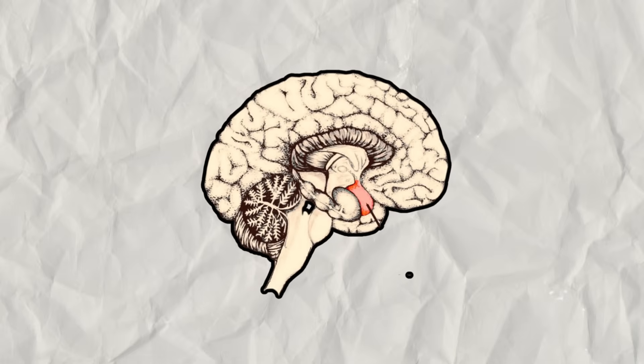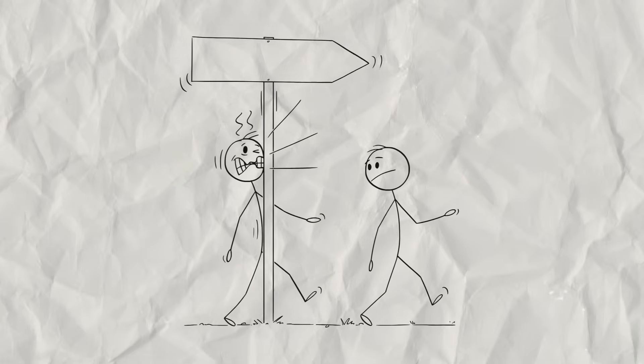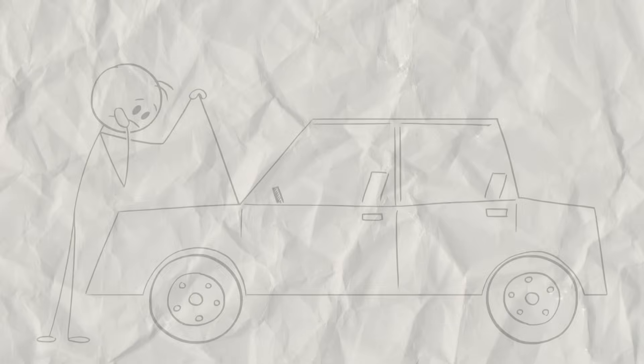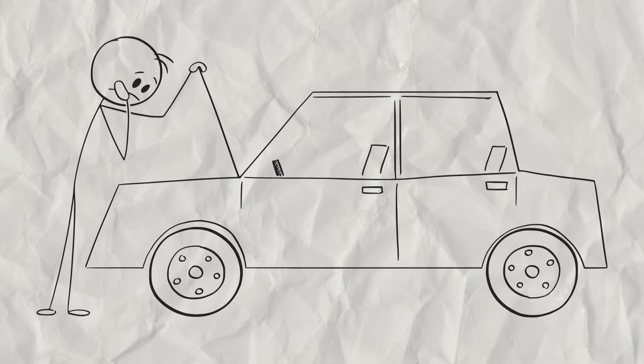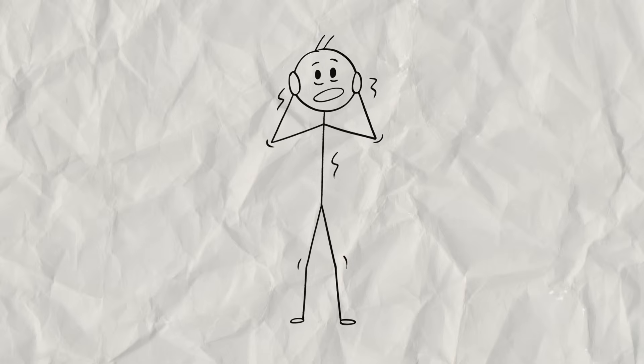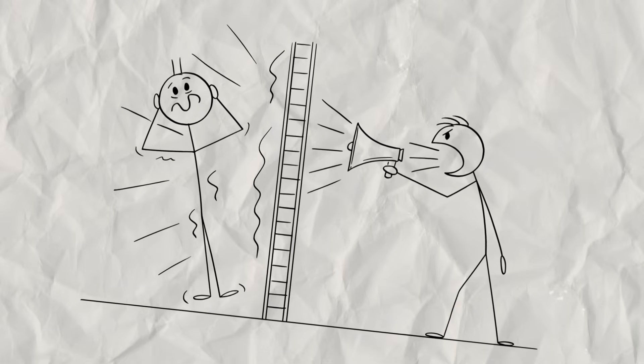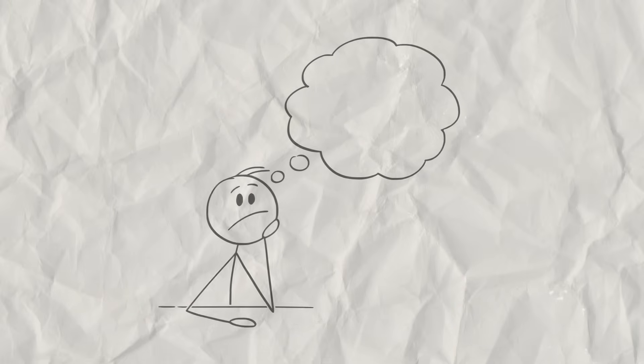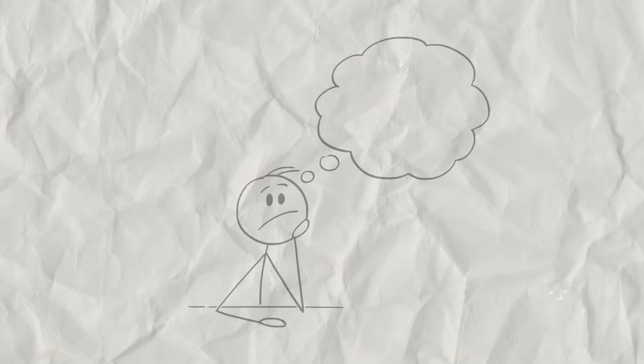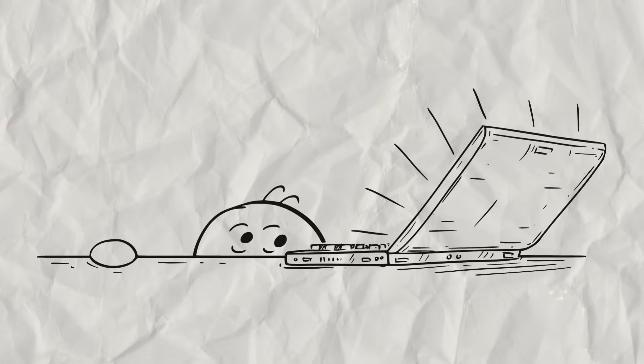The amygdala becomes hyperactive and hypersensitive. It starts to see danger everywhere. This is why a car backfiring on the street can send a jolt of pure panic through your body. It's why a raised voice in the next room can make your heart pound in your chest. Your brain isn't just remembering the danger. It's re-experiencing it on a cellular level.